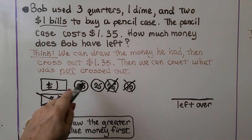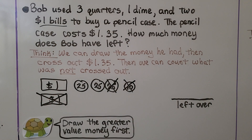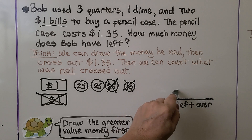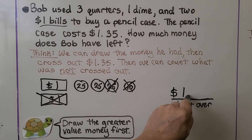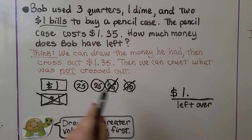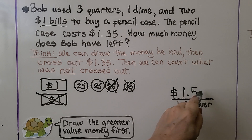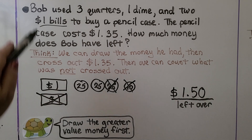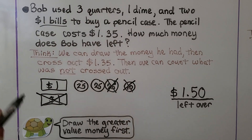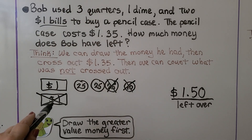Now we can count what was not crossed off: one dollar and two quarters. Two quarters would be 50 cents. That means he had $1.50 left over. We drew all the money it said, crossed off how much he spent, and then counted what was left over.